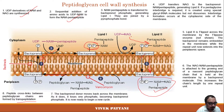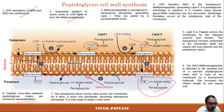UDP-NAG is then added and UDP is released, so NAG joins the bactoprenol-NAM pentapeptide complex. This bactoprenol complex is transferred to the other side of the membrane by flippase. The NAG-NAM pentapeptide unit is added to the peptidoglycan chain, bactoprenol is freed as bactoprenol diphosphate, transported back, loses one phosphate to become bactoprenol phosphate for reuse.